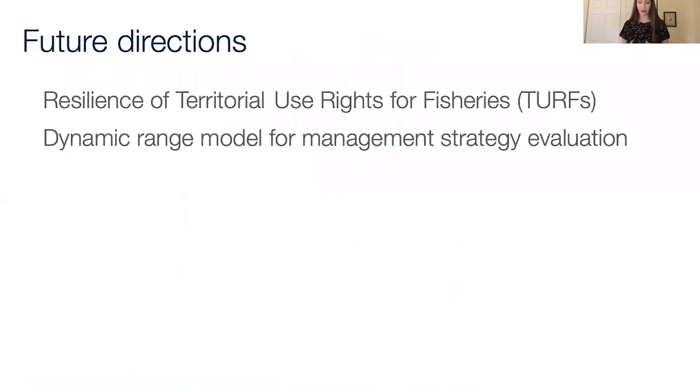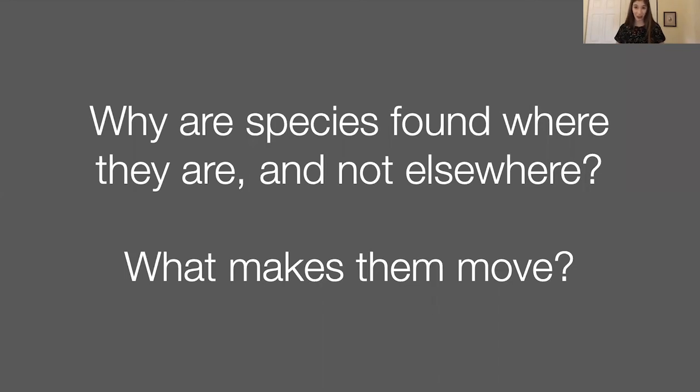That project, that work is done, but I'm still trying to contribute to how we manage species on the move. We're wrapping up a project now looking at how resilient one popular management strategy for coastal small scale fisheries is, the territorial use rights for fisheries management scheme, how resilient that is to disturbances like species on the move. And once this dynamic range model that I'm developing in my postdoc research is a little further along, we'll also be using it for management strategy evaluation to look at how different future fishing scenarios affect species ability to track climate change. So I want to end with this question that I started with, and hopefully I've convinced you that there are many empirical analyses that we can do now to understand species on the move better. That we can also predict past and future dynamics with process based models, and that we don't need to wait around for perfect information to start managing for species on the move. Thank you.